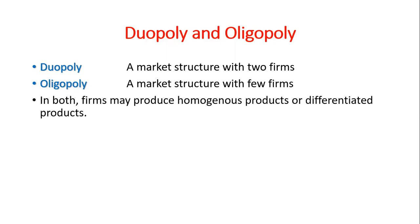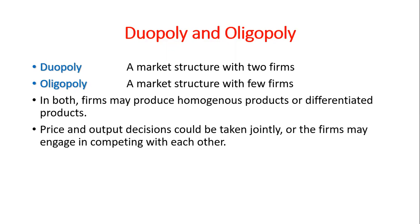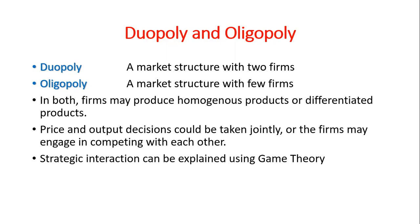Similarly, in both Duopoly and Oligopoly, firms may join hands with each other and take price and output decisions with cooperation. Or firms may compete with each other and try to maximize their own profit without caring for others. There are a number of ways in which price and output decisions can be formed. We shall discuss some of those cases in this lecture, whereas the case of strategic interaction between the firms, which is explained by game theory, will be discussed in the next lecture.